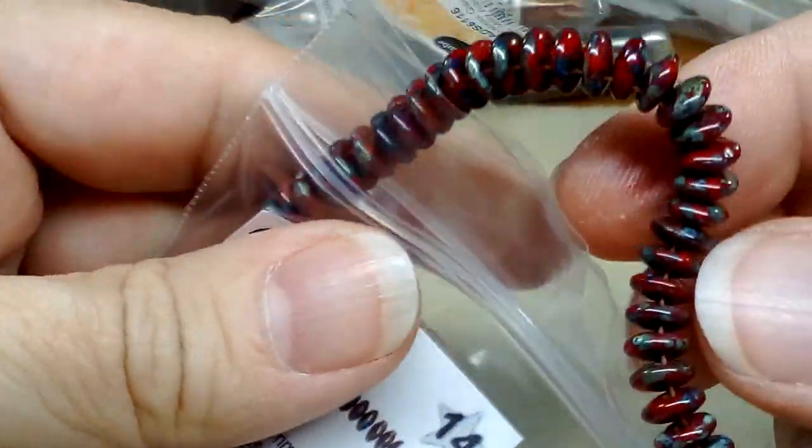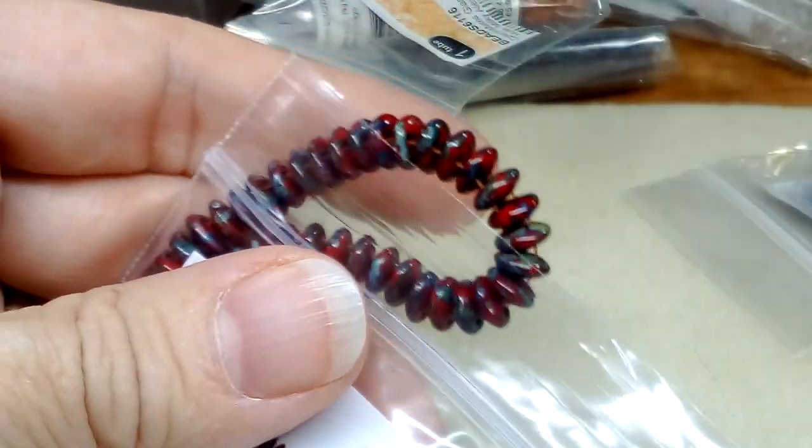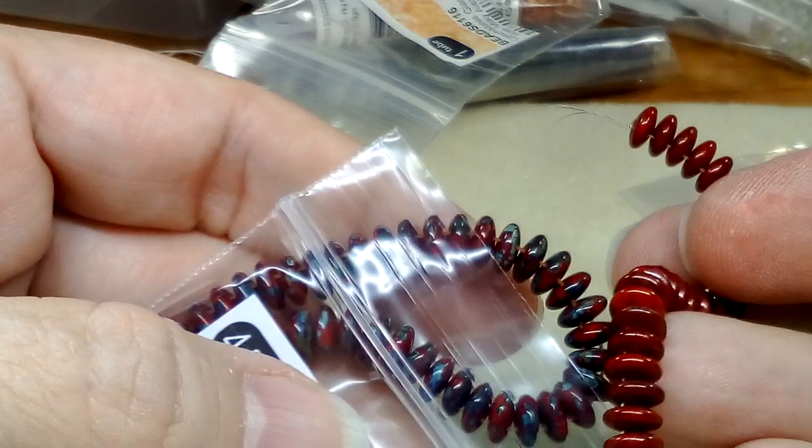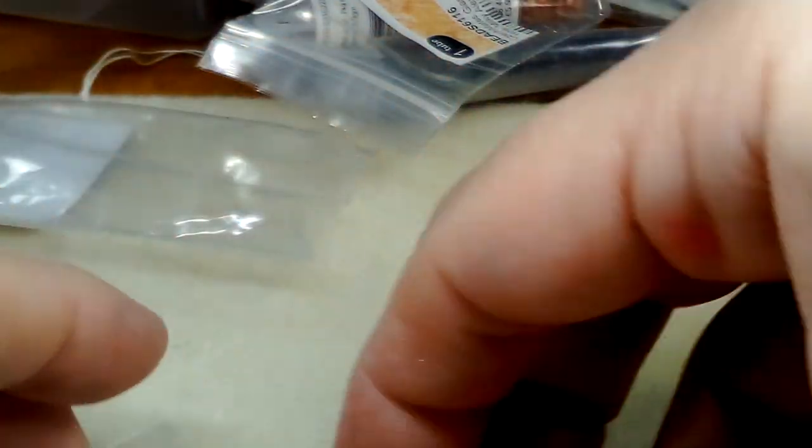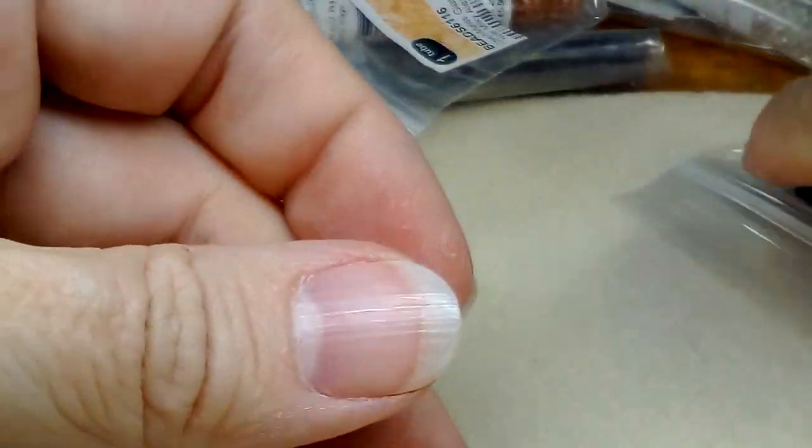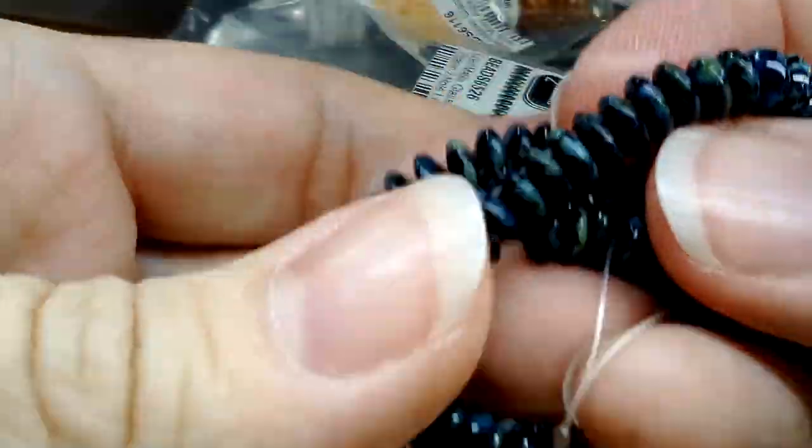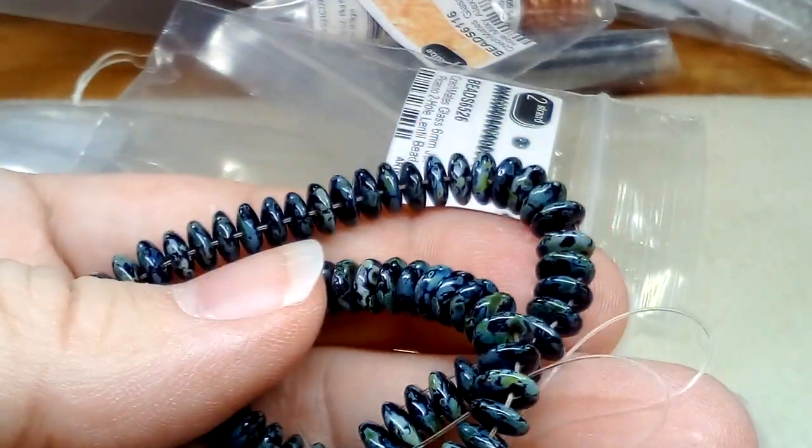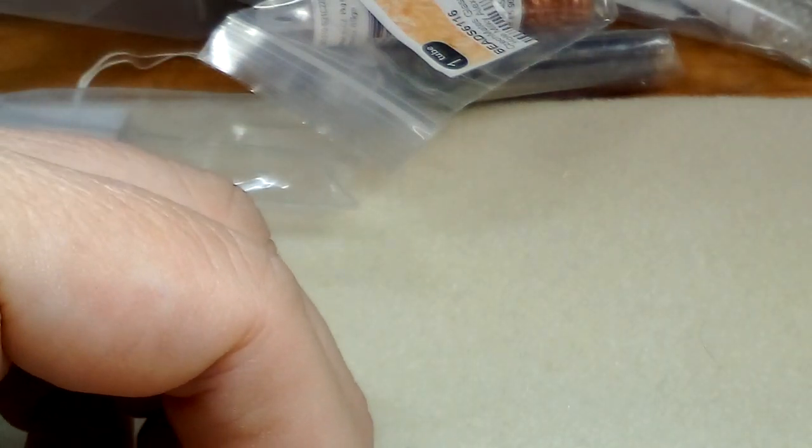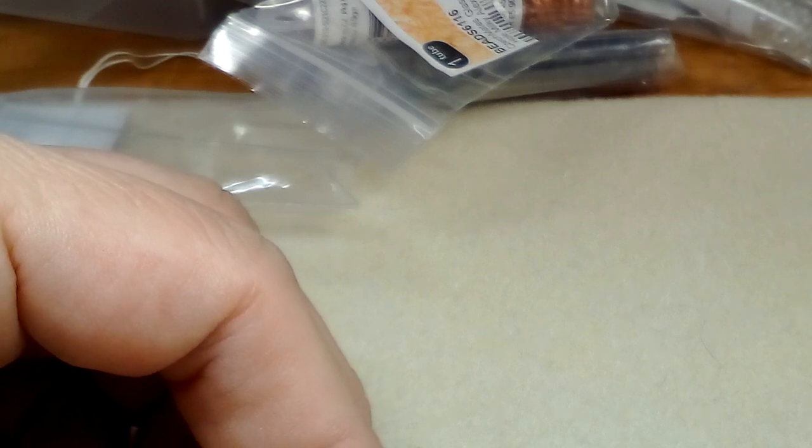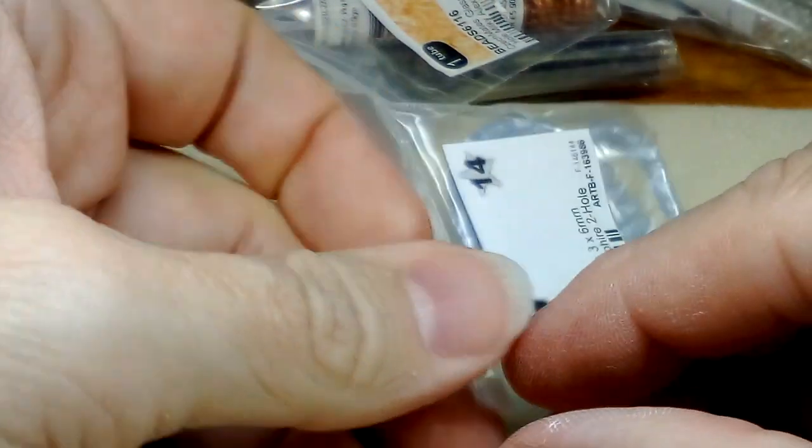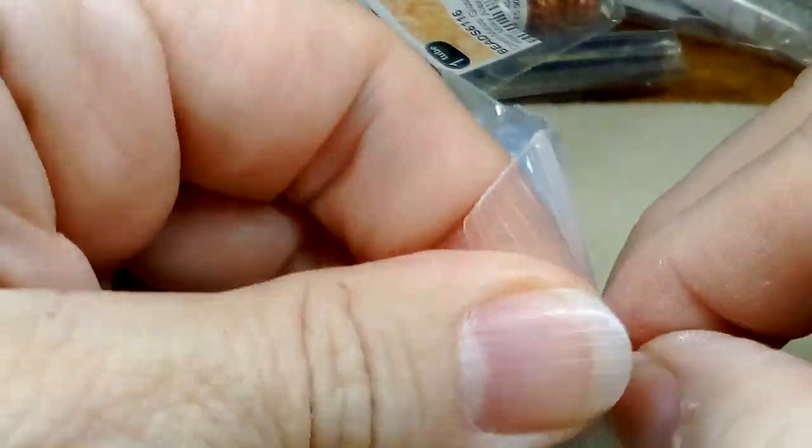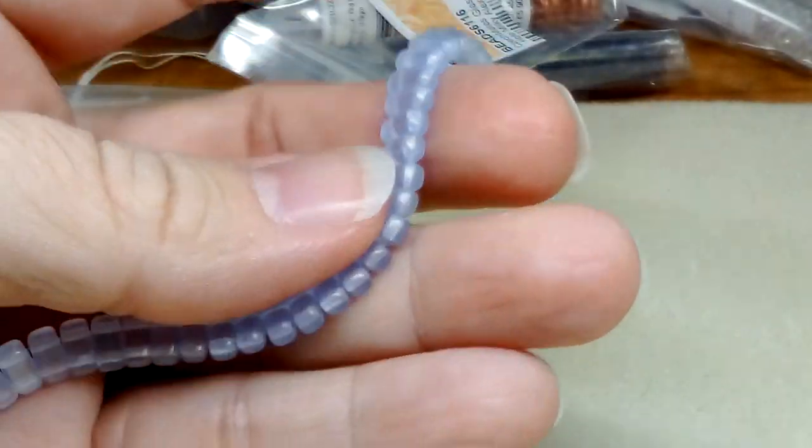I thought we came across these already, this is Picasso red. It's different. We've got some Picasso jet, they are lovely. The lentils that I bought before, I paid something like three dollars a strand. That's why I went nuts when these were like between 50 cents and a dollar. These are beautiful.